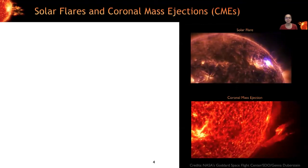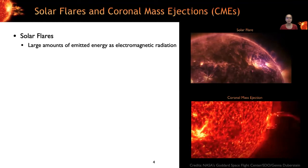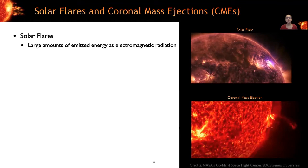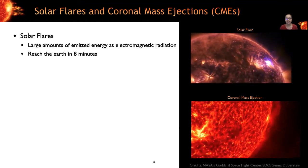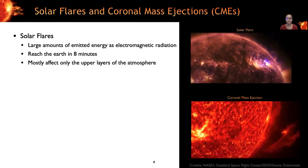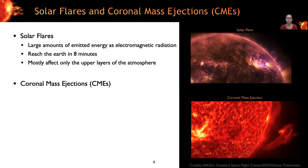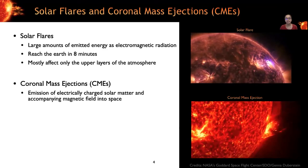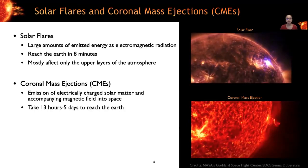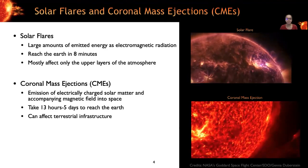There are two types of solar events that are popularly known as solar storms. They are solar flares and coronal mass ejections. And their impact on global infrastructure varies widely. Solar flares involve large amounts of emitted energy as electromagnetic radiation. So these are essentially flashes of light that reach the Earth in just eight minutes. Fortunately, they affect only the upper layers of atmosphere and do not cause any damages to terrestrial infrastructure. But they do affect satellite communication.